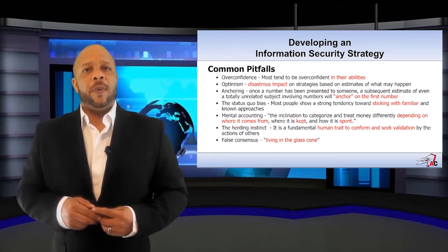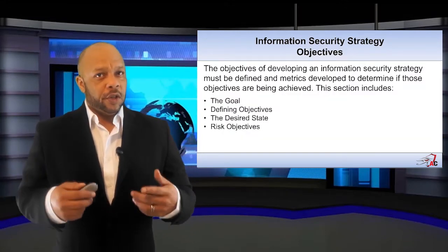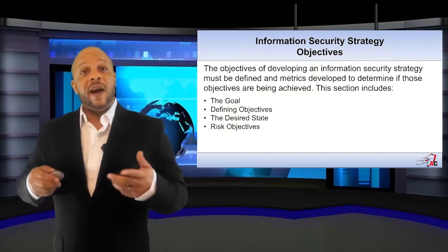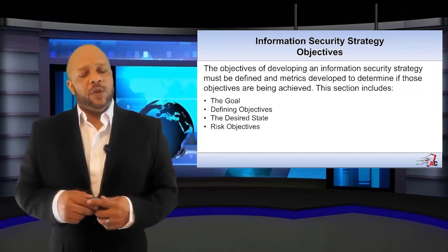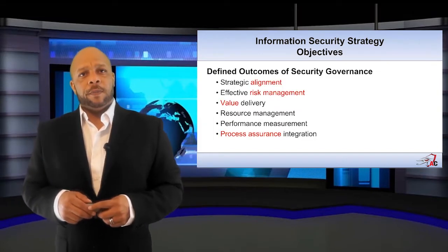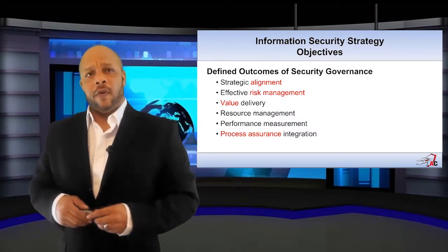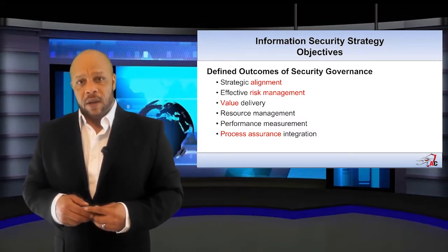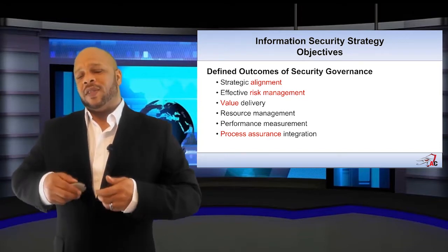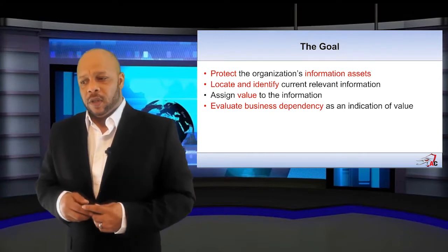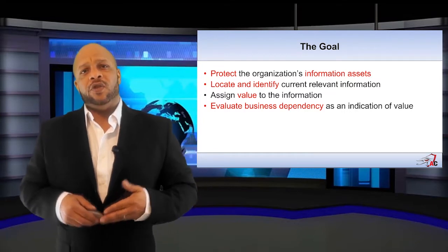The core objectives to developing an information security strategy include defining our goal, defining our objectives, beginning to define our desired state, and any risk objectives we need to be aware of. The next step is to look for the outcomes of security governance: have we achieved strategic alignment, effective risk management, value delivery, and process assurance integration?